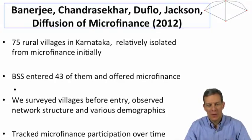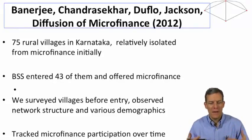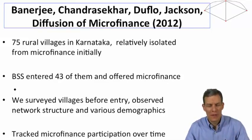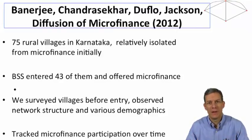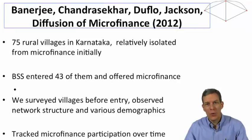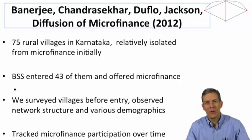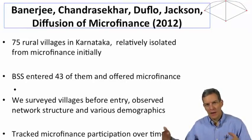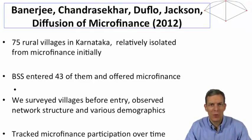We know the initial points the bank touched — who they first told about microfinance. In each village, the bank identified a particular set of people to talk to first: shopkeepers, teachers, self-help group leaders — people they thought might be well-connected. They told those people they were going to offer loans, to tell their friends and spread the news, and then every two weeks they came back until people could join the loan program.